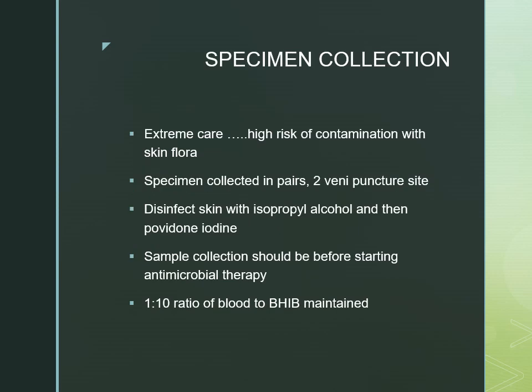During specimen collection, utmost care should be taken as there is a chance of contaminating the blood sample with skin flora. Proper aseptic technique should be followed and at least two samples from two different venipuncture sites are needed. If the patient already has a central line, one sample should be from the central line and another from a different venipuncture site. Disinfect the skin first with isopropyl alcohol, then with povidone-iodine, chlorhexidine, or tincture iodine. Chlorhexidine and tincture iodine have a better antiseptic effect compared to povidone-iodine.